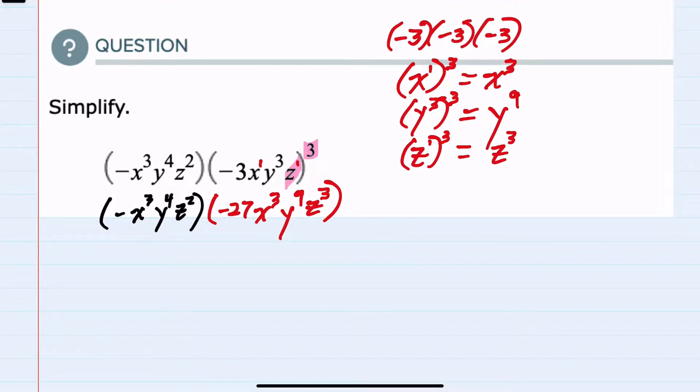And now since we have multiplication, we can look at what portions can be multiplied and simplified. So for example, they both have numerical parts, coefficients. We have a negative 1 in the first and a negative 27 in the second. And when we multiply those, we would have a positive 27.